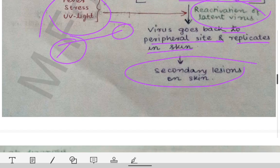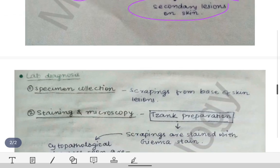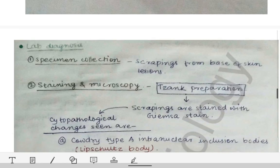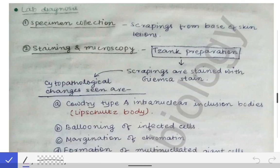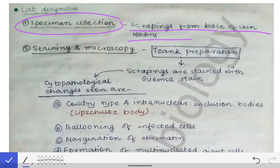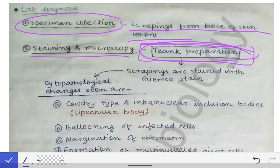For lab diagnosis, we first collect the specimen. Since these viruses cause skin infection, the specimen is scrapings from the base of the skin lesions. We then perform staining and microscopy. Importantly, we prepare the Tzanck preparation — this is very important and must be remembered. The Tzanck smear is used for HSV1, HSV2, and also varicella zoster virus which causes chickenpox.